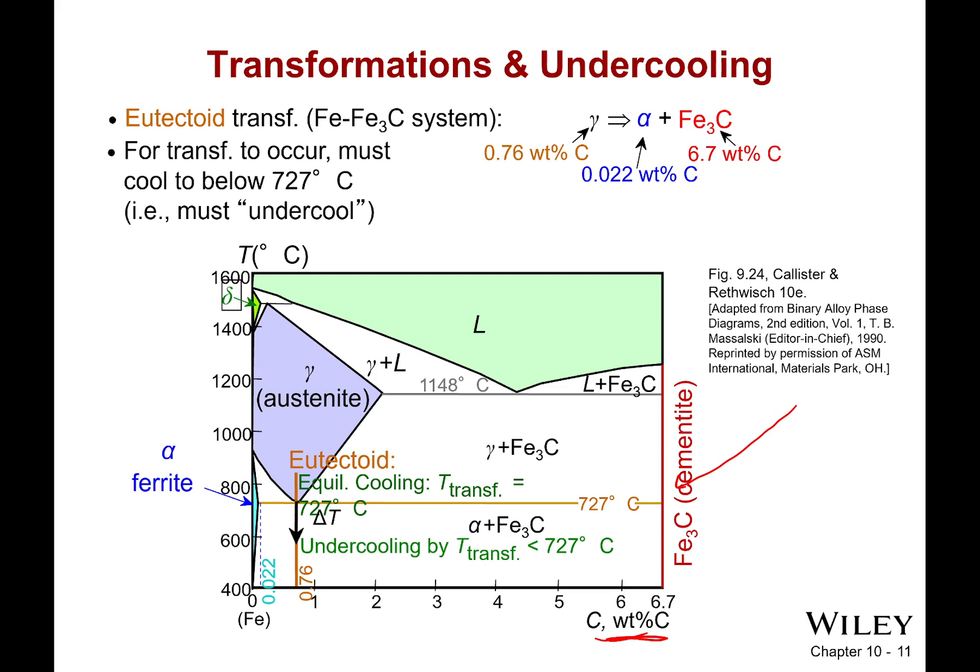Now if I want to have a transition happen, there's various places they can occur. First off, I can have a eutectic transition right here. I go from a liquid to two solids. In this case I have cementite and austenite.